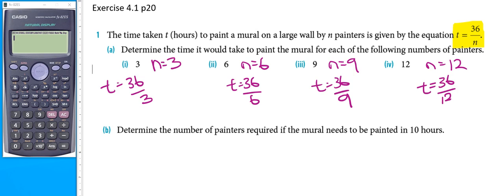In our first example, 36 divided by 3 equals 12. Therefore, t equals 12 hours.